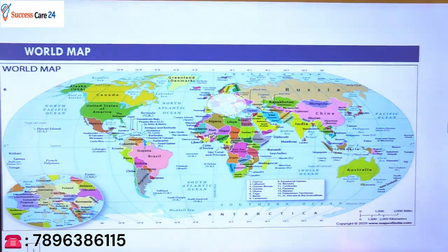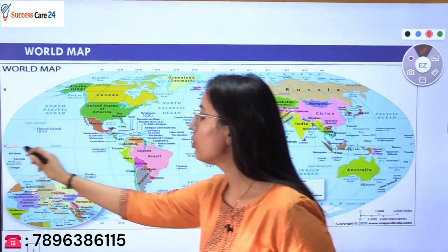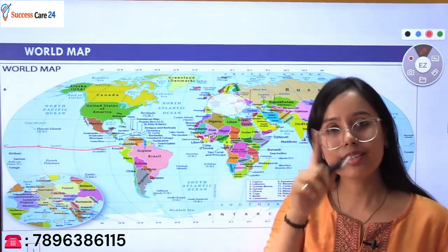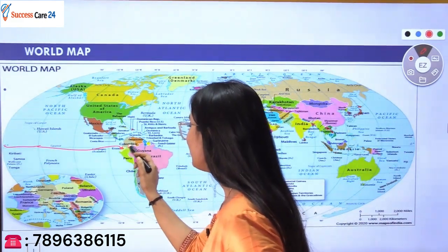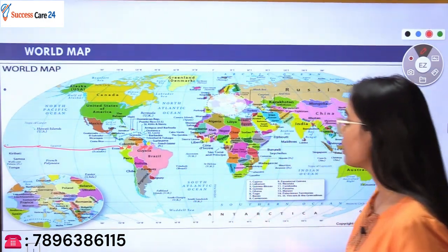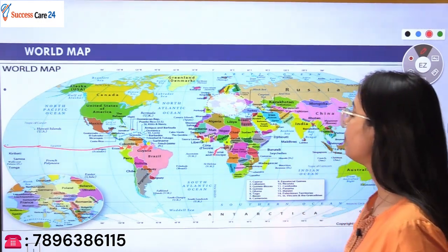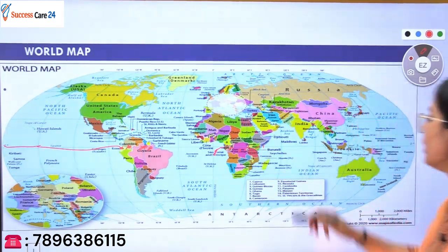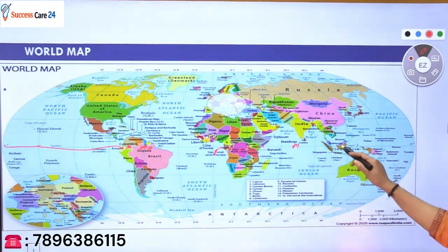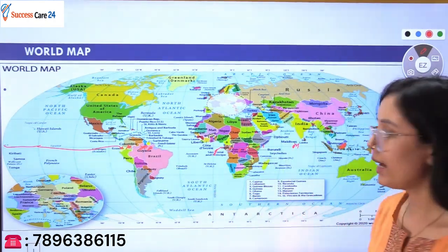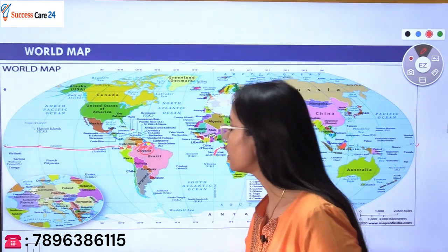Let's revise which countries the Equator passes through. At zero degrees we have the Equator. In South America: Colombia, then Brazil, then Guiana. Then in Africa: Gabon, then Democratic Republic of Congo, then Uganda, then Kenya, then Somalia. Then we come to the Maldives here, then Indonesia, and then Kiribati islands are here — this is your Kiribati. The Equator passes through all these countries.